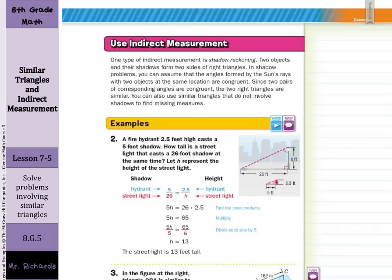Since two pairs of corresponding angles are congruent, the two right triangles are similar. Think about it: you have the right angle, and you have that angle that's formed by the sun's rays. You can use similar triangles that do not involve shadows to find missing measures as well.